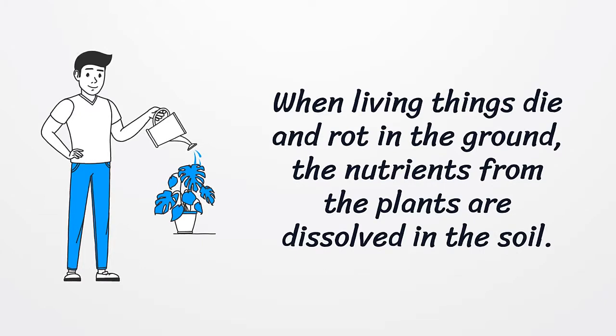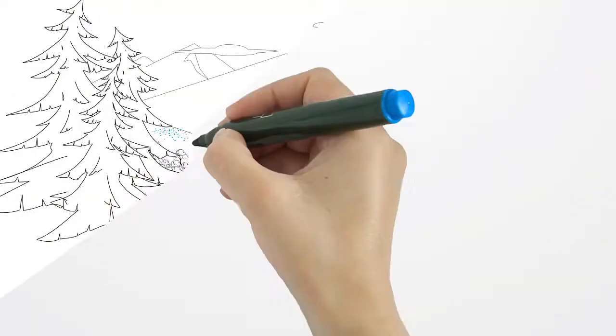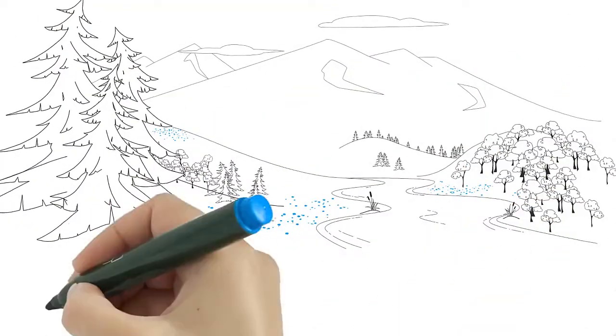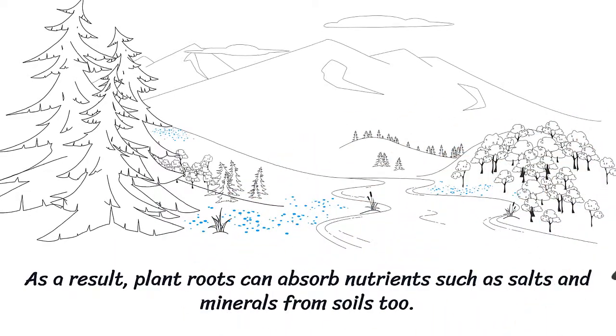When living things die and rot in the ground, the nutrients from the plants are dissolved in the soil. As a result, plant roots can absorb nutrients such as salts and minerals from the soil.